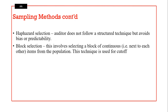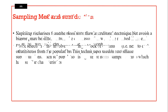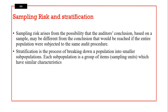Haphazard selection is very close to random sampling — the auditor does not follow a structured technique but avoids bias or predictability. Block selection involves selecting a block of continuous items from the population. This technique can be used to establish cut-off — whether a transaction was recorded in the correct accounting period.